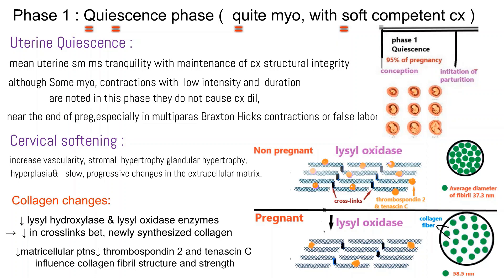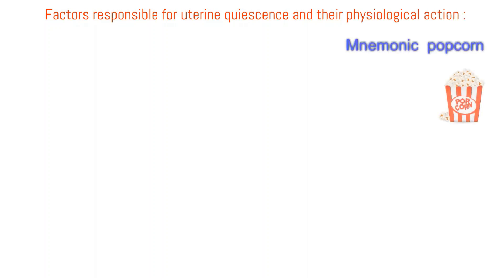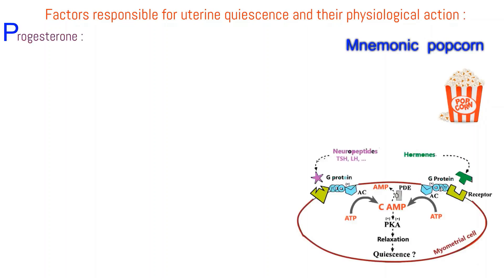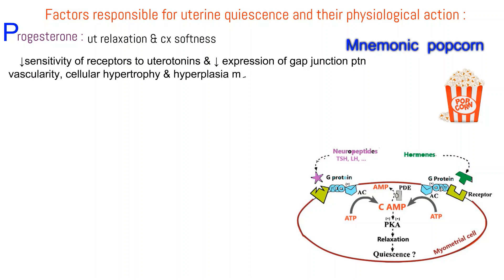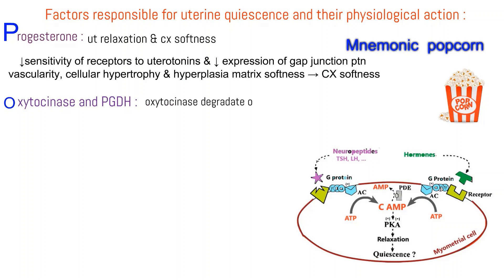Factors responsible for uterine quiescence — mnemonic POPCORN. P: Progesterone causes uterine relaxation and cervical softness, decreases receptor sensitivity to uterotonins, inhibits expression of gap junction proteins, and increases vascularity, cellular hypertrophy and hyperplasia, and matrix softness. O: Oxytocinase and prostaglandin dehydrogenase degrade prostaglandins, so no ripening of the cervix. P: Prostacyclin binds its receptor, triggering G-protein activation and increasing intracellular cyclic AMP.